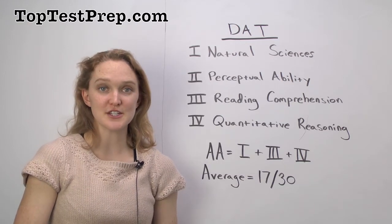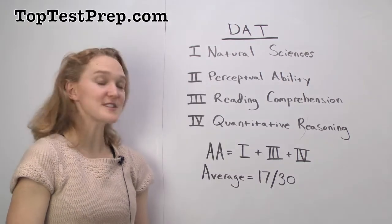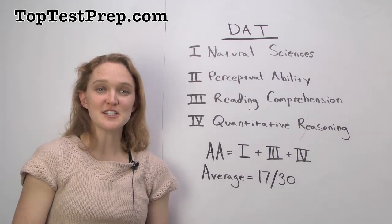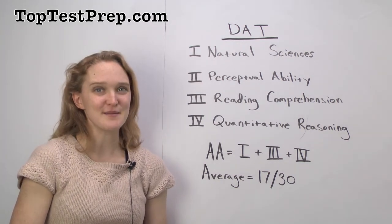The DAT has four sections. First, there's natural sciences. This section has questions on general biology, general chemistry, and organic chemistry.